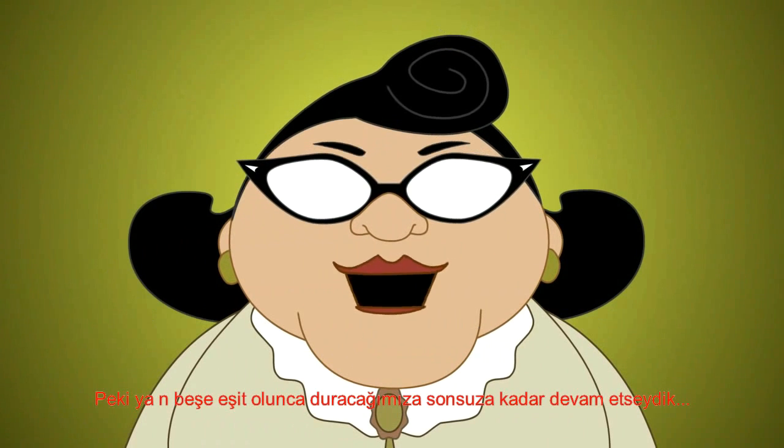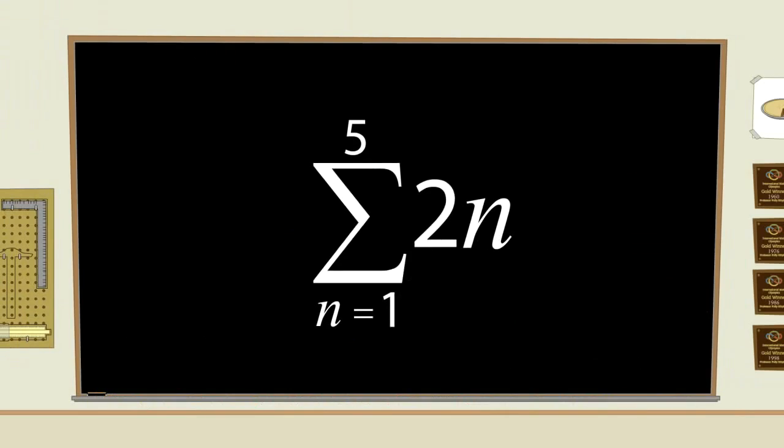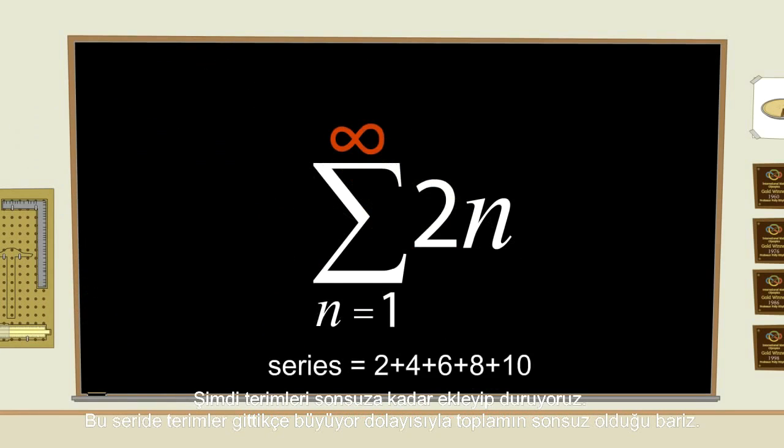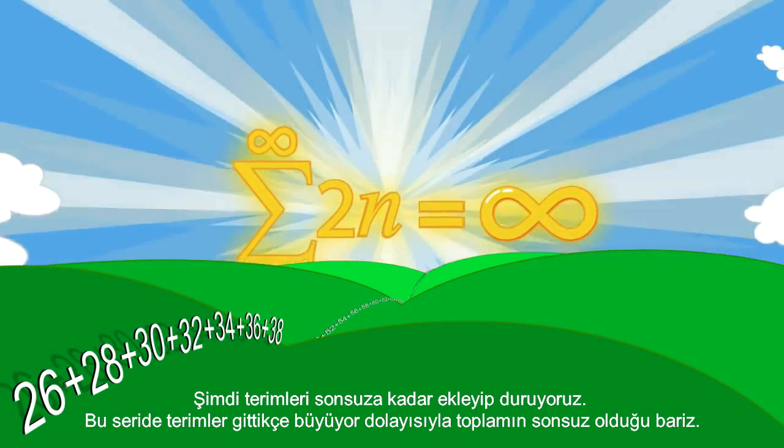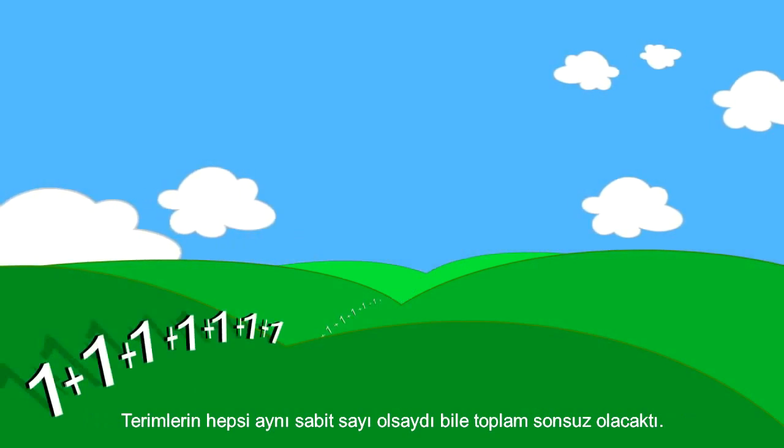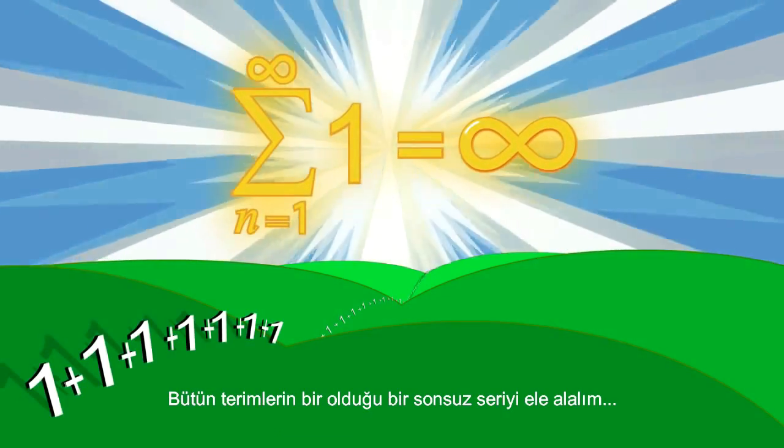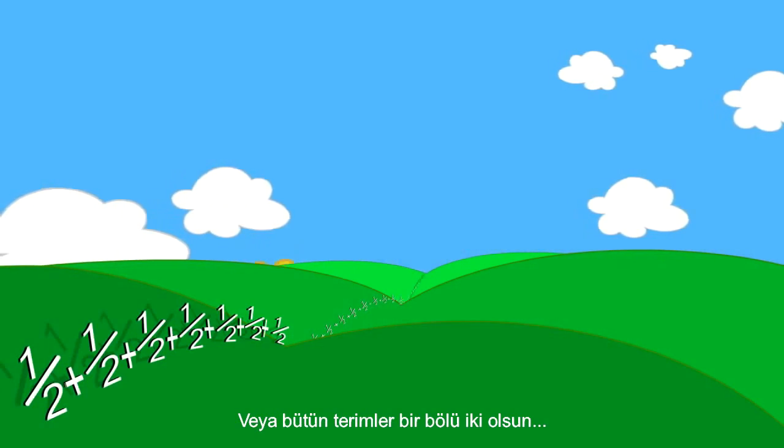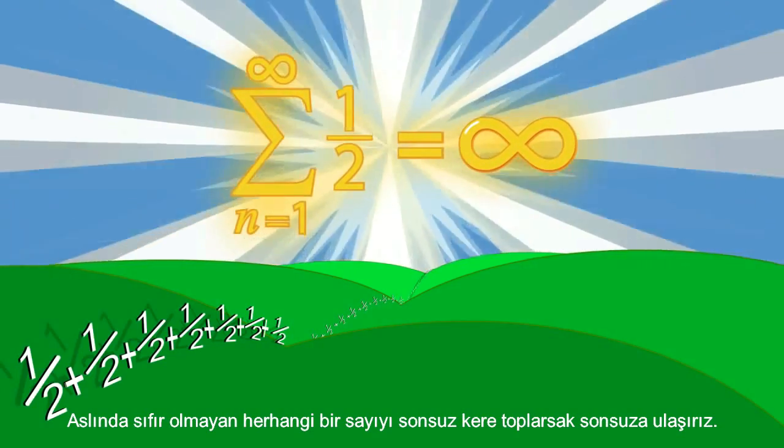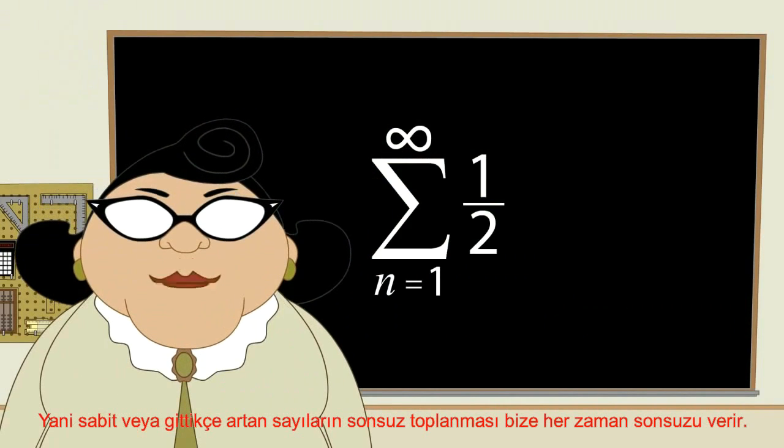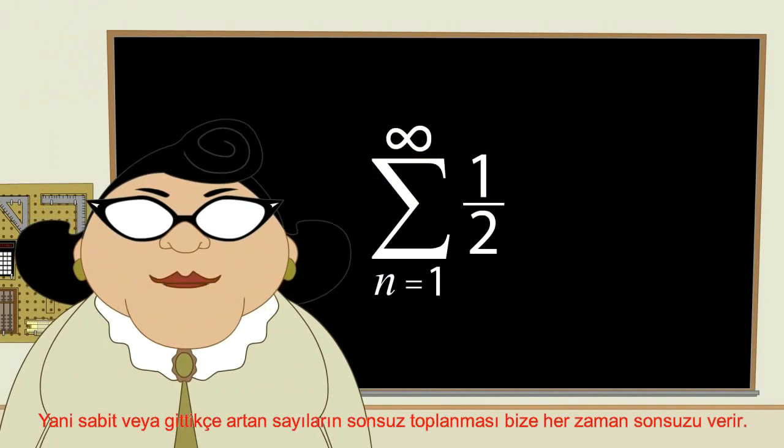What if instead of stopping when n equals 5, we went on forever? In this case, instead of the 5 at the top, we would put a little infinity sign. This would then be an infinite series. Now, we would keep adding terms forever. In this series, the terms get bigger and bigger. So, the sum is obviously infinite. But even if the terms were all the same number, the sum would still be infinite. Take, for example, an infinite series where all the terms are the number 1, or 1 half. In fact, adding any number that's not zero an infinite number of times gives you infinity. So, as long as the terms grow or stay the same, an infinite number of them will always sum up to infinity.